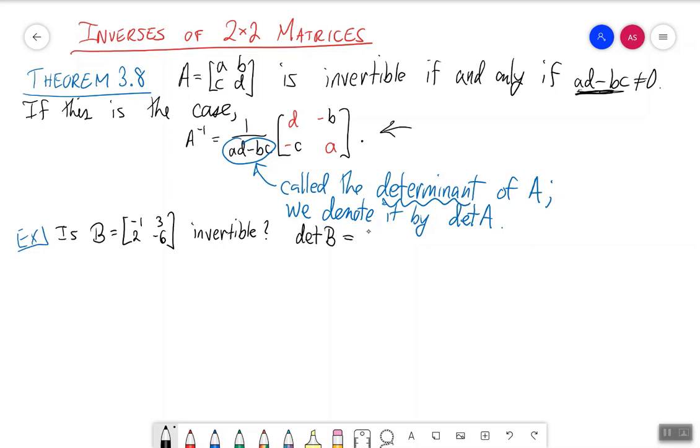So the determinant of B is equal to minus 1 times minus 6 minus 3 times 2, which is equal to 6 minus 6, which is zero. And therefore, we conclude, just as we did in the intro video, no, it is not invertible.